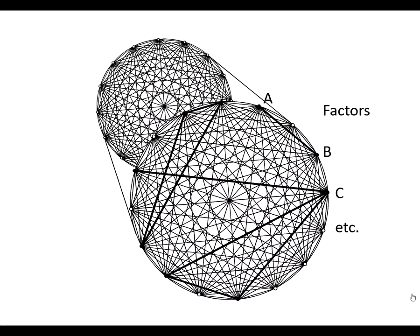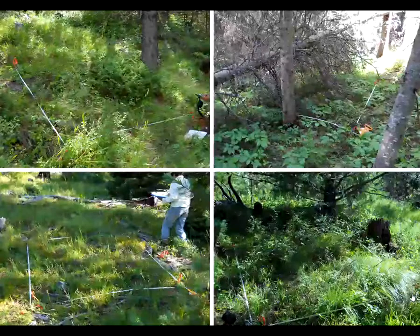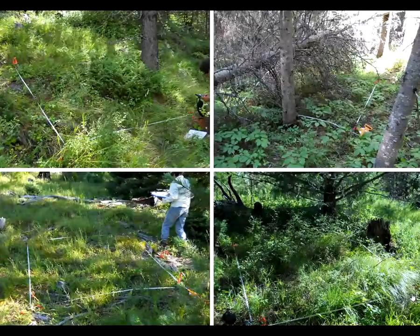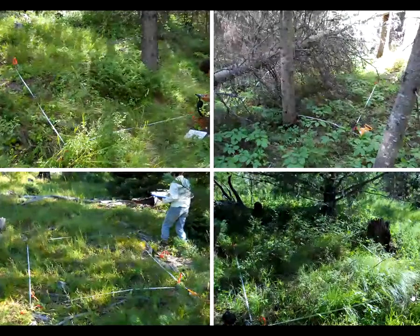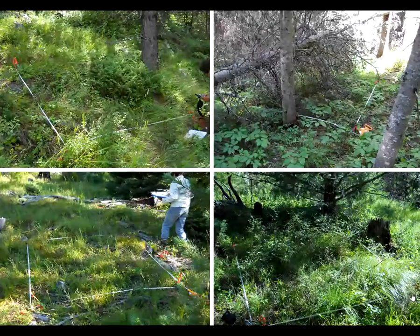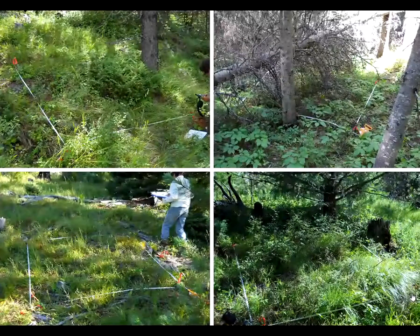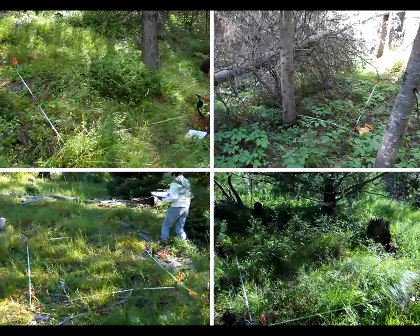Ecosystems present us with a mind-numbing array of factors — some known, some unknown — that can plausibly affect a species or other variable of interest. The factors can be other species, abiotic environmental variables, and disturbances. We do an experiment or find relationships at a particular place and time. If we try this at another place or time, the results are likely to be different. Context is important because other factors come into play, often ones that we aren't measuring.